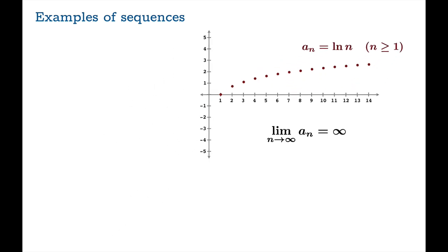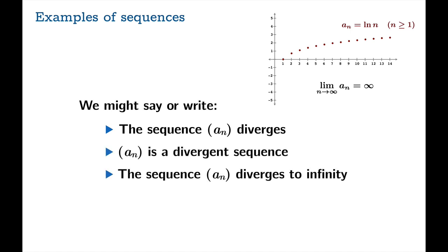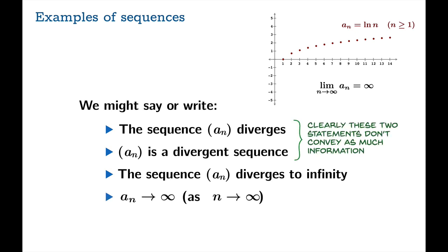And in this case, the language that comes along with this example, we might say that the sequence a_n diverges. a_n is a divergent sequence. The sequence a_n diverges to infinity. a_n goes to infinity as n goes to infinity. And once again, please look at the first two. These do not convey as much information. We're saying the sequence fails to have a limit, but we're not saying the way in which that happens.